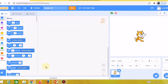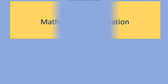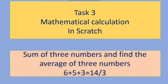We are going to learn how to make automatic operations in Scratch. This is Task 3: mathematical calculations in Scratch. We'll see how we can add three numbers and find the average of three numbers. These are automatic calculations we can do in Scratch programming.